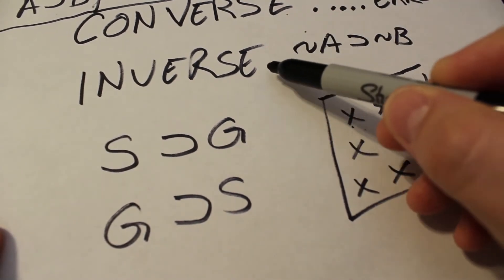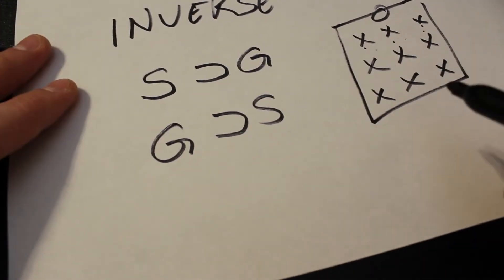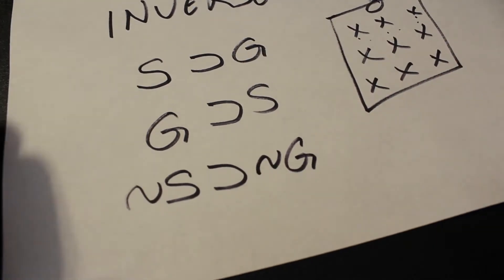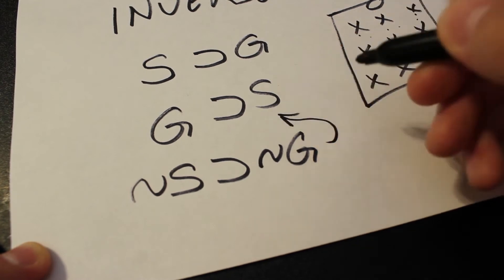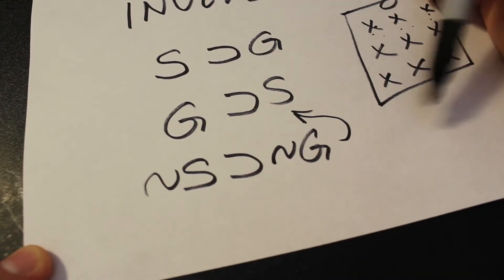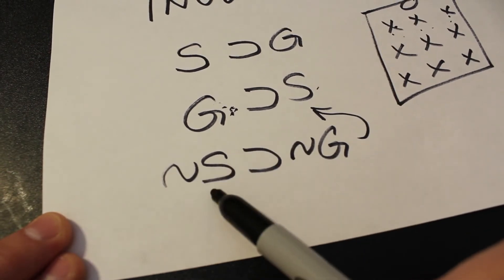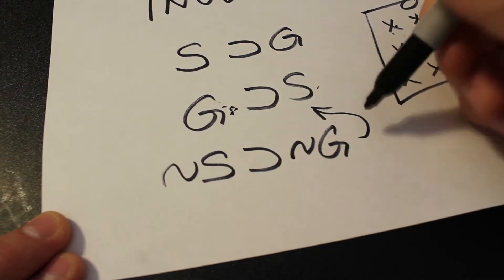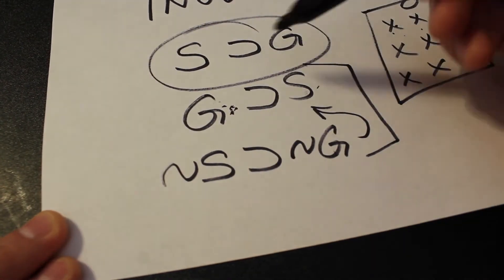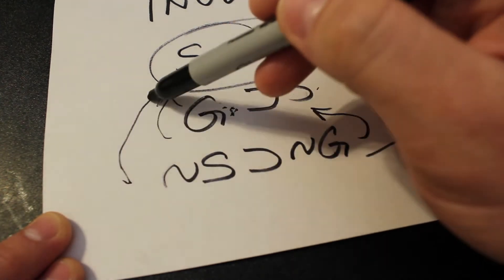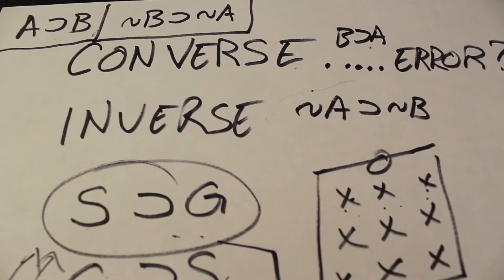A converse error is logically and deductively the same thing as an inverse error, because the converse and inverse are contrapositives of each other — they're saying the same thing. For example, to reason that if I do not sit in the front of the classroom then I do not get a good grade — that sounds like an absolute statement. It makes sense using the converse reasoning, because if the converse says a good grade means you sat in front, then not sitting in front means no good grade. But these are not saying the same thing as the original statement — that's because they are the converse and inverse of it. So the reasoning is not always absolute when using the converse and the inverse; they lead to an error.